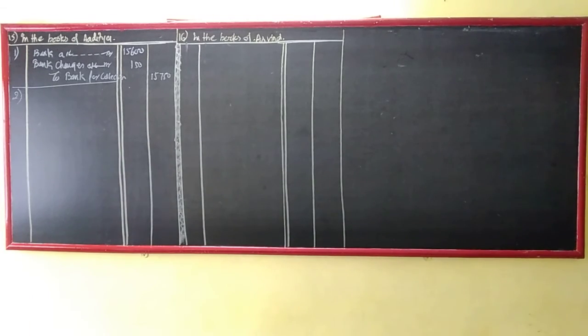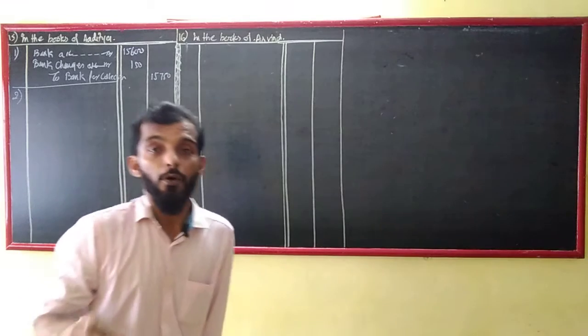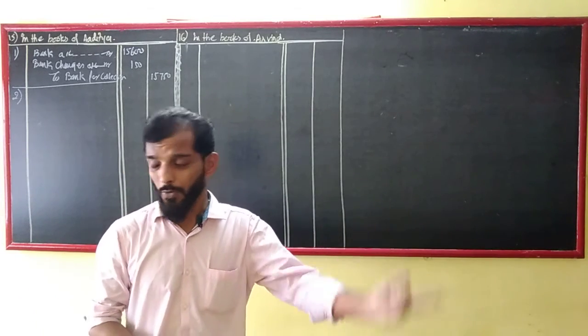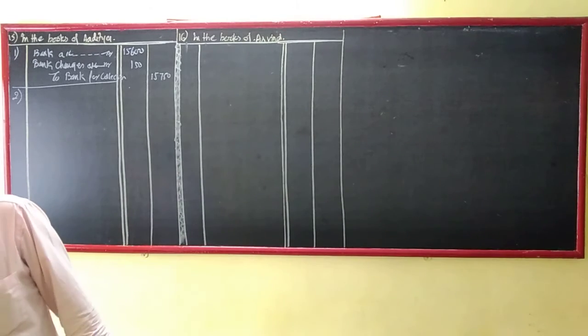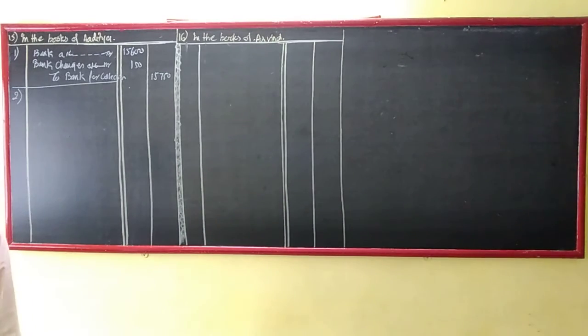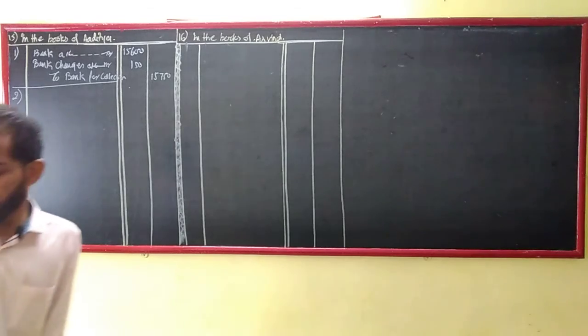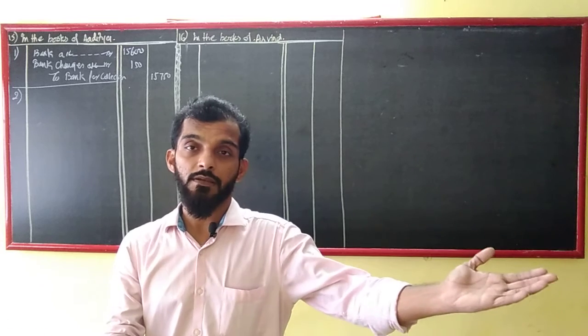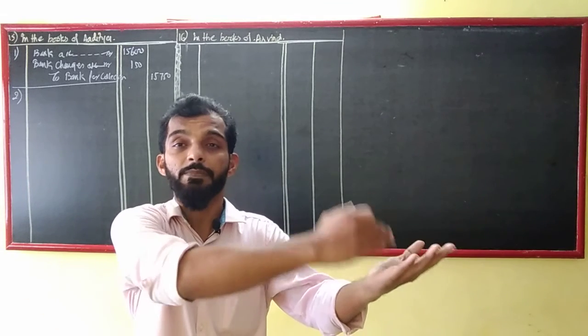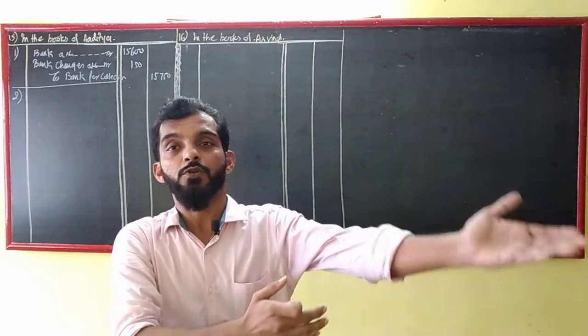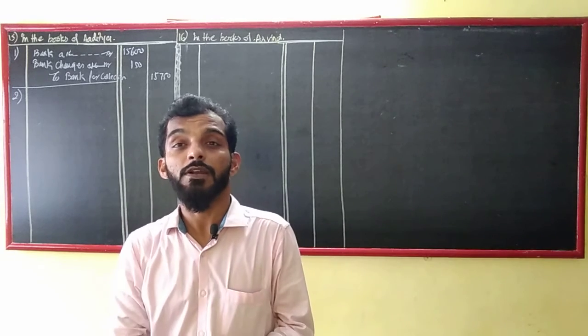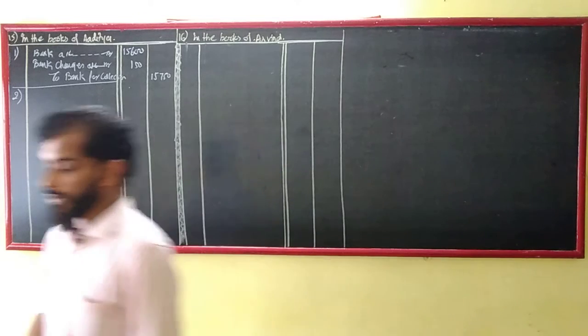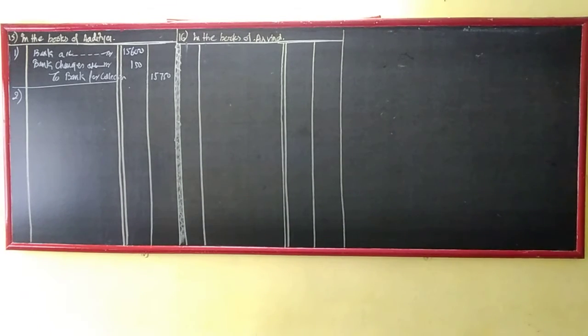Asha informs Aditya that Nisha's acceptance for 23,000 endorsed to Asha has been dishonored. Noting charges paid by Asha is 330. Now, Nisha's account bill dishonored, which was endorsed to Asha. Did she pay? No. Bill dishonored. So, Asha has been given, who has given her? Nisha's account.